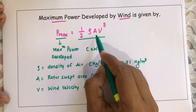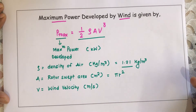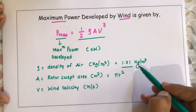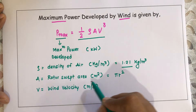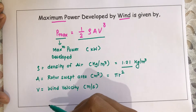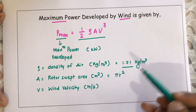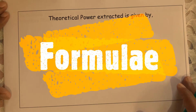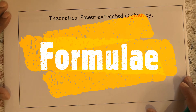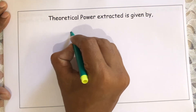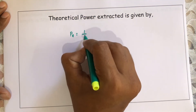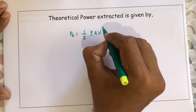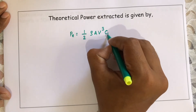Rho is density of air with a general value of 1.21 kg per meter cube. A is rotor swept area equal to pi r square, and V is wind velocity. The theoretical extracted power from the wind is given by Pe = ½ρAV³·Cp.